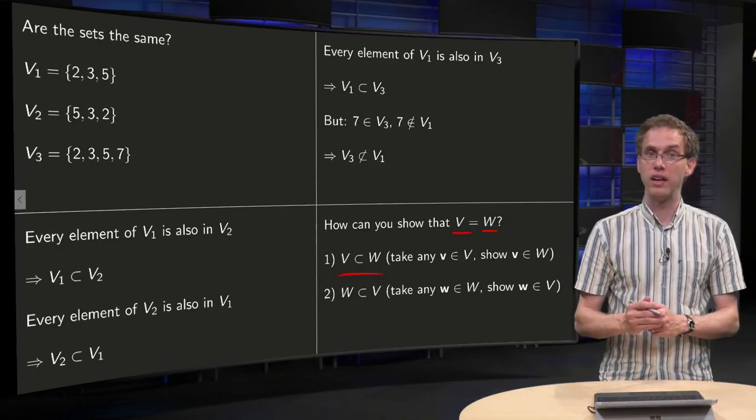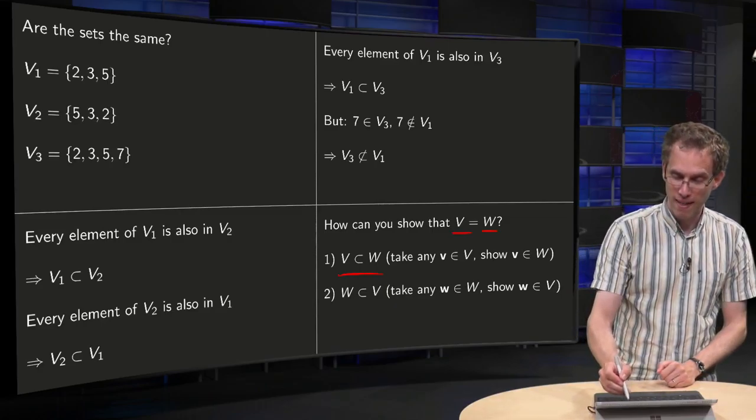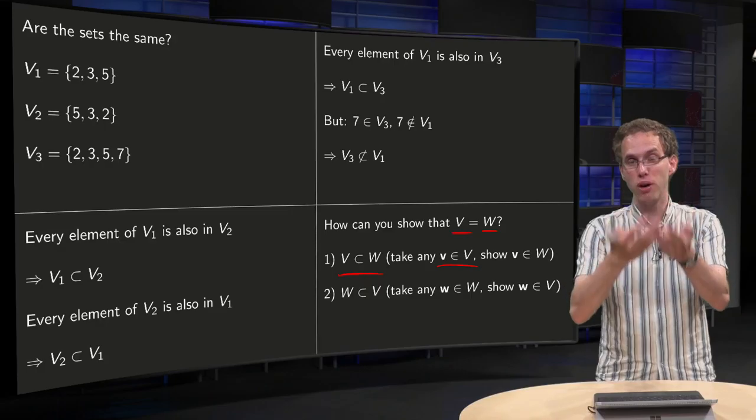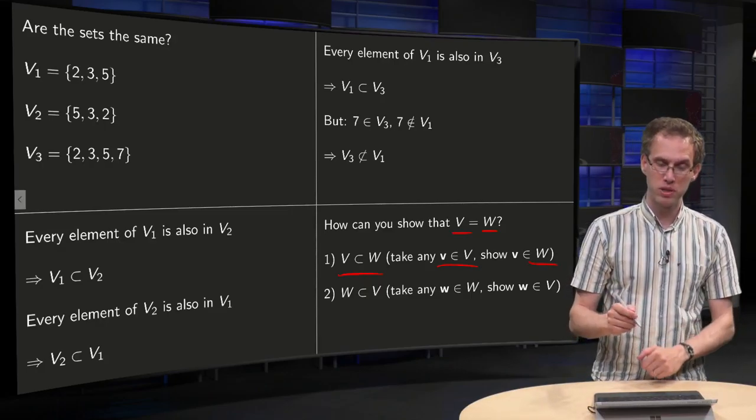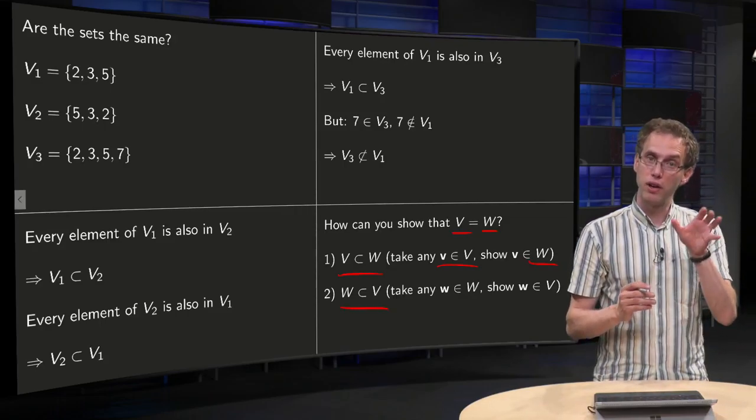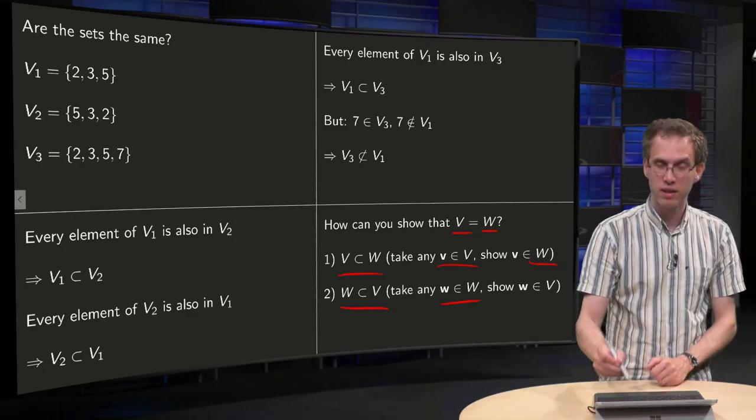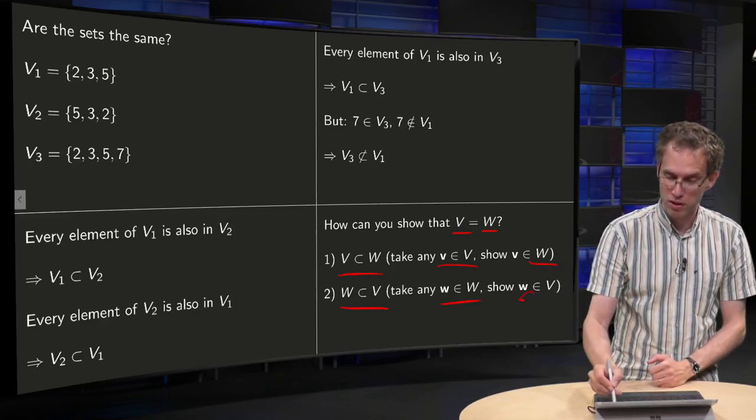First you show that V is contained in W. How do you do that? You pick any element v in the big V and you show that this v is also an element of W. That's the first inclusion. And the second step, you show that W is a subset of V. How do you do that? You pick any vector w in your big W and you show that this w is in V as well.